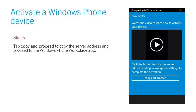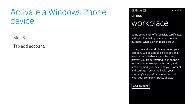Step 5. Tap Copy and Proceed to copy the server address and proceed to the Windows Phone Workplace app. Step 6. Tap Add Account.